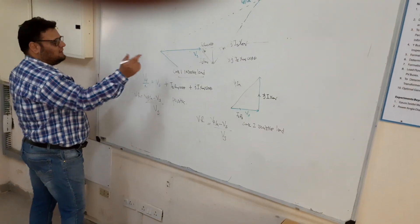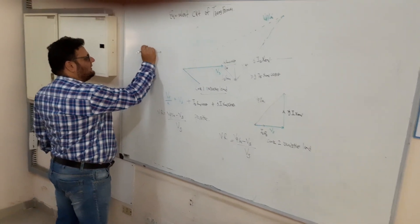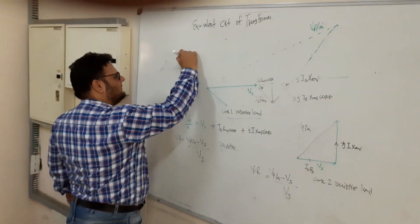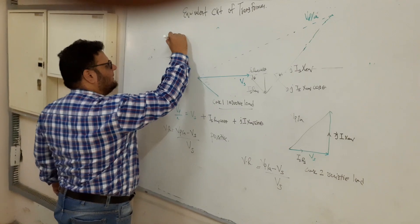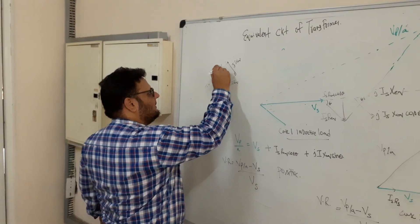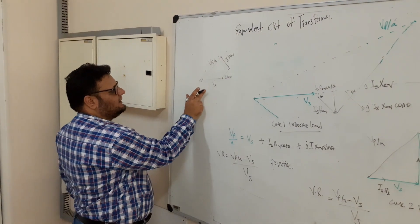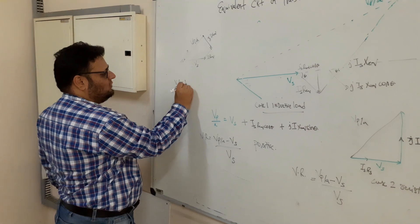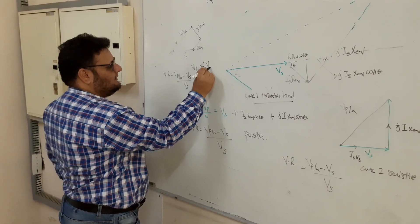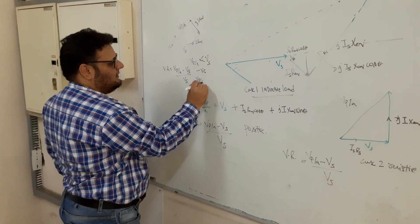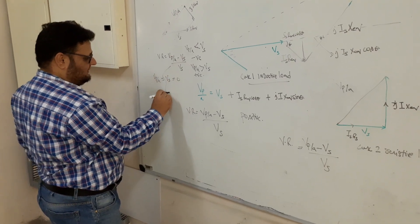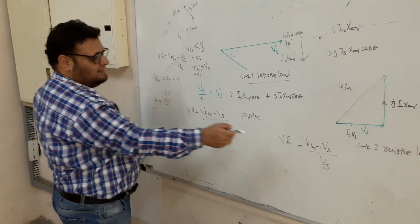For a capacitive load, the current is leading, so theta is in the leading direction. Adding I × R_equivalent and J × I × X_equivalent, the resulting VP/A is significantly reduced compared to VS. Voltage regulation = (VP/A − VS)/VS can be negative if VP/A < VS, positive if VP/A > VS, or zero if VP/A = VS. The zero voltage regulation case occurs when theta equals 45 degrees for a capacitive load.